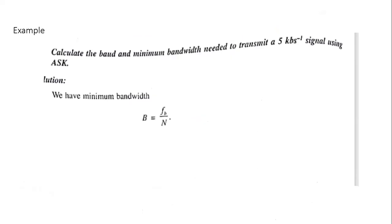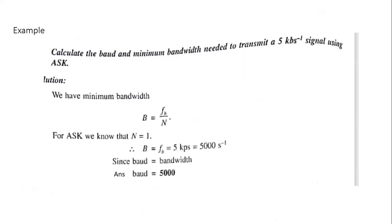Problem 3: Calculate the baud rate and minimum bandwidth needed to transmit a 5 kbps signal using ASK. For ASK, n = 1, so the formula B = Fb / n gives B = Fb = 5 kbps. Since baud rate equals bandwidth for ASK with n = 1, the baud rate is also 5000 baud. Note that bandwidth is expressed in hertz while Fb is in bits per second.